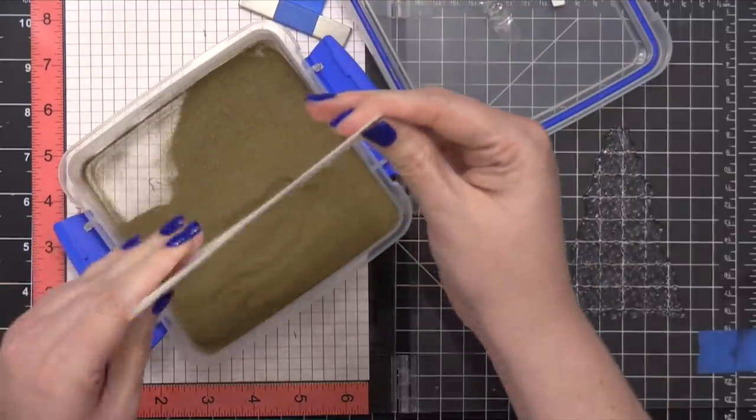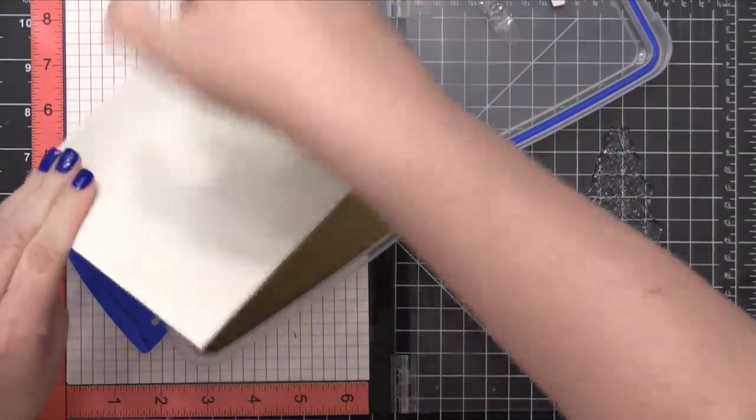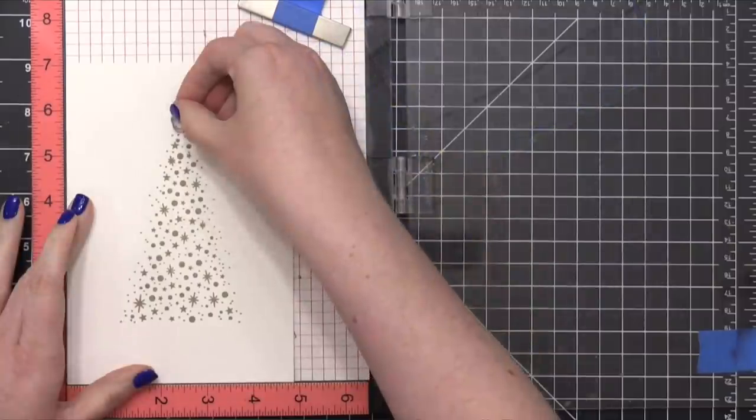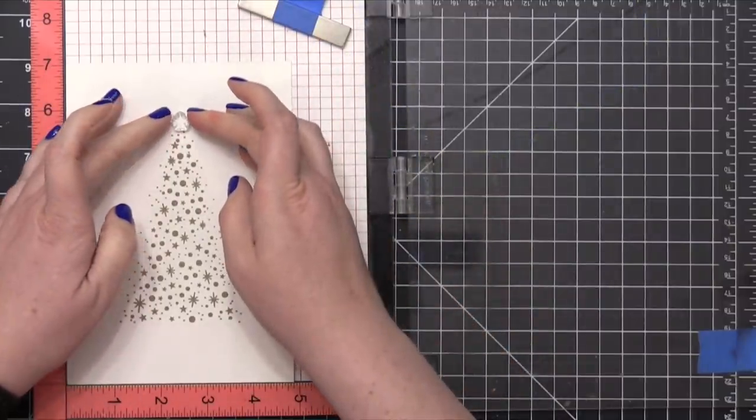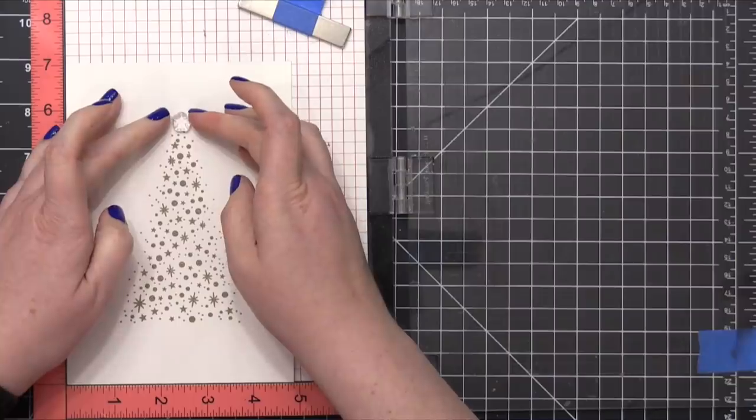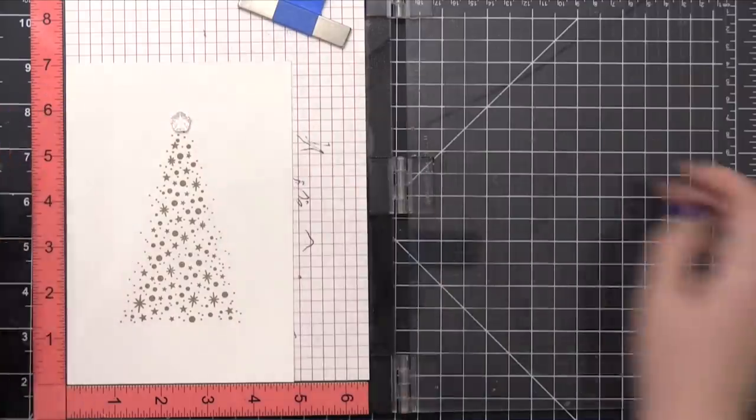I decided since that little star wasn't really going to interfere with the embossing powder that I've just applied, I would go ahead and add it first and add the embossing powder on top of that before I heat set the entire card front.